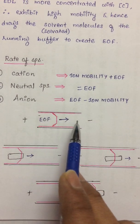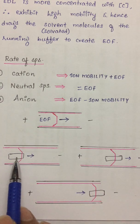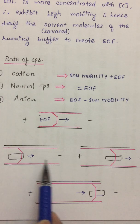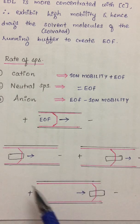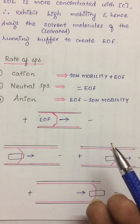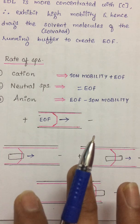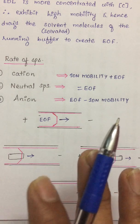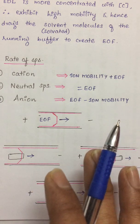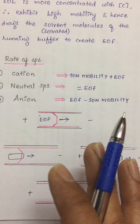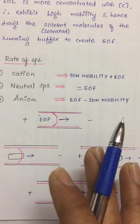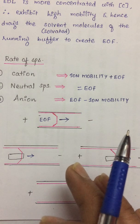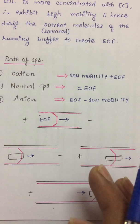The electro osmotic flow is towards the cathode. Since its magnitude is higher, it pulls the entire bulk solution with it, and as the bulk solution moves, the components are detected. This is how capillary electrophoresis is useful in separating various components — cations, anions, and neutral species — which can be analyzed from the electropherogram. Factors that affect the electro osmotic flow will be discussed in the next video.